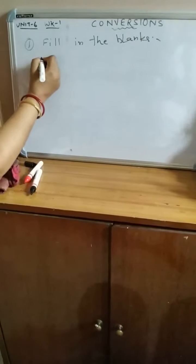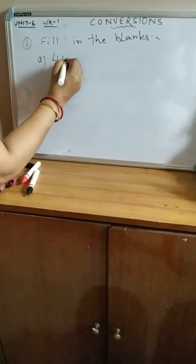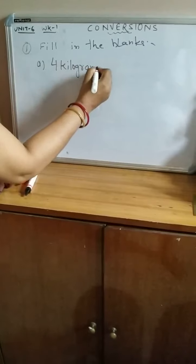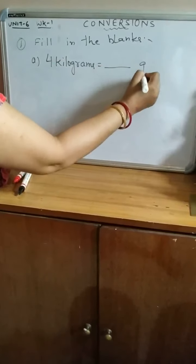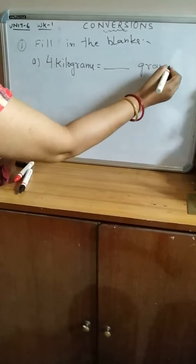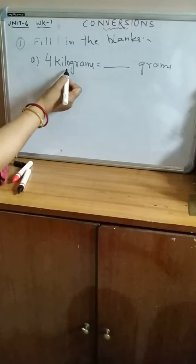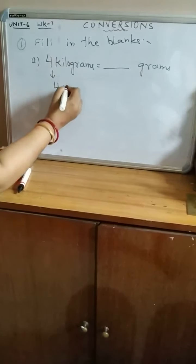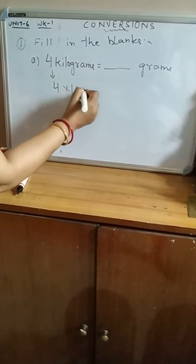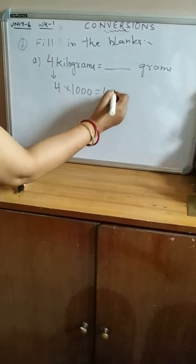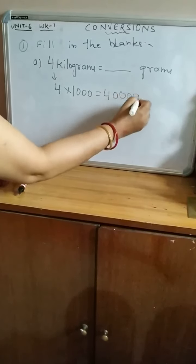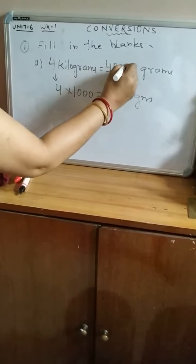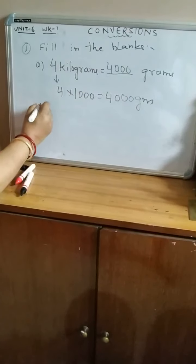Question A: 4 kilograms equals how many grams? To convert kilograms into grams, the number of kilograms — that is 4 — will be multiplied by 1000. The product is in grams, so your answer is 4000 grams.